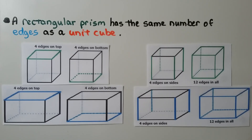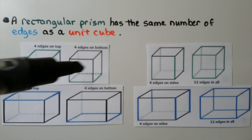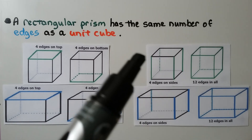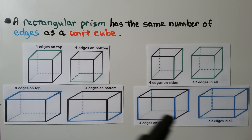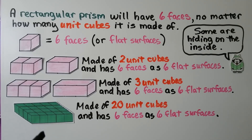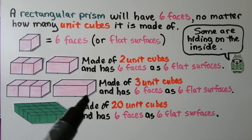A rectangular prism has the same number of edges as a unit cube. A unit cube has four edges going around the top, and so does a rectangular prism. It has four edges going around the bottom and four edges going around the sides — twelve edges in all — and so does a rectangular prism. Even though there are many unit cubes, it's still one edge for the rectangular prism.